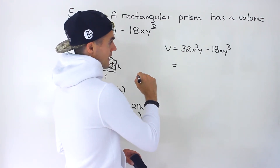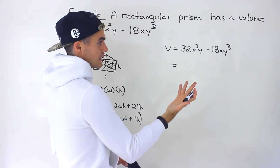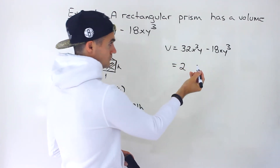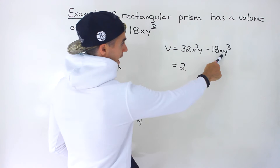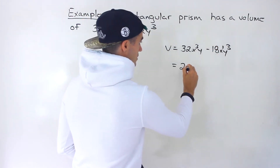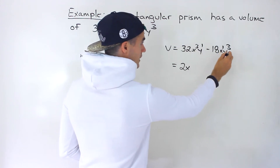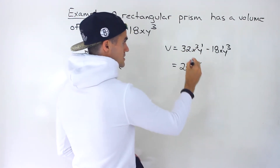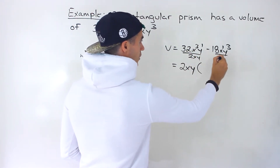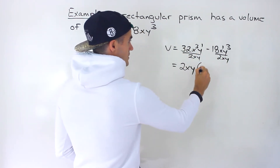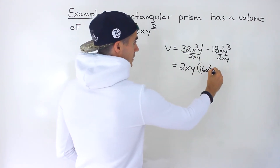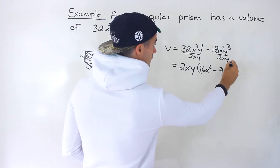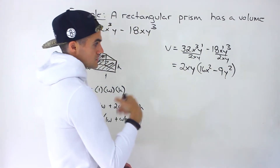First, we always check if we can take out a greatest common factor. Between 32 and 18 we can take out a 2. There's an x in both terms, so we take out x to the first power (the lowest exponent). There's a y in both terms with lowest exponent 1, so we take out 2xy. Inside the brackets: 32÷2 = 16, x³÷x = x², the y's cancel; minus 18÷2 = 9, x's cancel, y³÷y = y². So we get 2xy(16x² − 9y²).